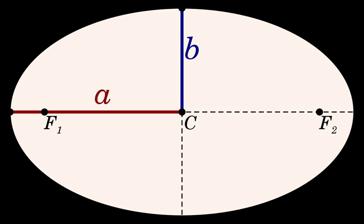It is often said that the semi-major axis is the average distance between the primary focus of the ellipse and the orbiting body. This is not quite accurate, because it depends on what the average is taken over. Averaging the distance over the eccentric anomaly indeed results in the semi-major axis.